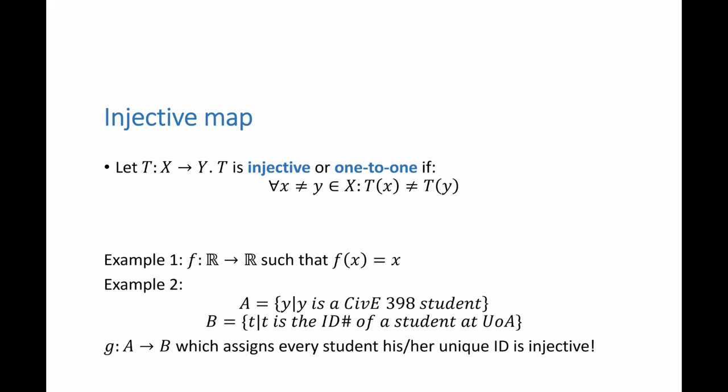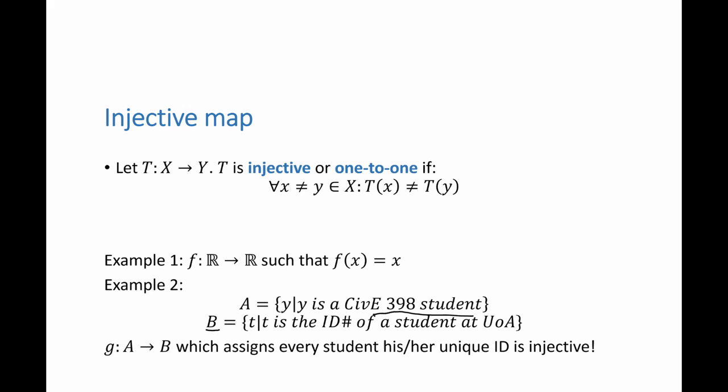Another example, if we think of the set A as the set of the students in CB398 and set B as the set of all the IDs at the University of Alberta, this is a really large set. Then the map G from A to B which assigns every student his or her unique ID is injective because every student here has a unique ID in the set B.